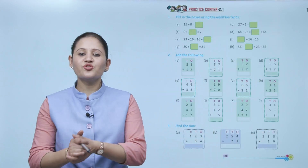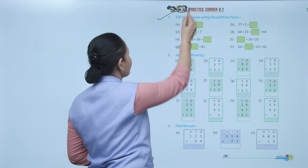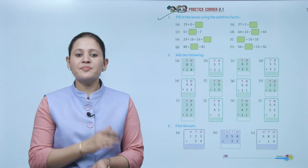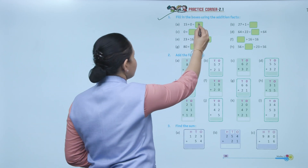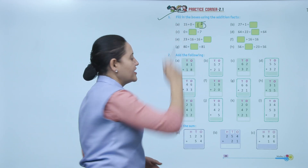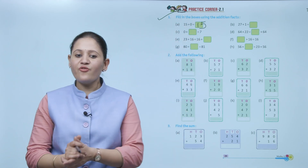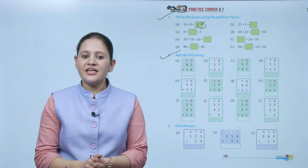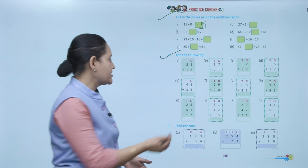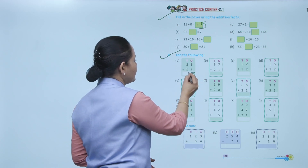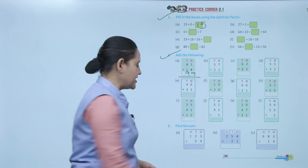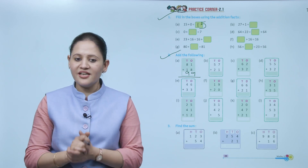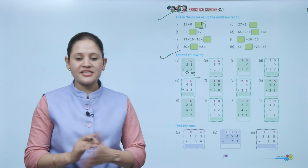Practice corner 2.1: Fill in the boxes using addition facts. 15 plus 0 — that is the number itself, so 15. Next, add the following: 81 plus 18. Start from ones — 8 plus 1 is 9; 8 plus 1 is 9. Sum is 99. Like this, you have to do the other questions.